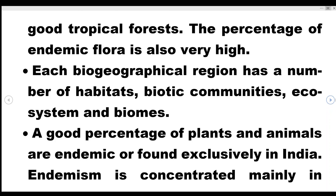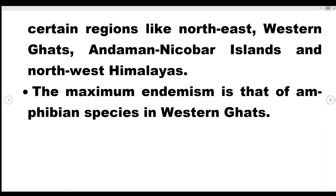A good percentage of plants and animals are endemic, or found exclusively in India. Endemism is concentrated mainly in certain regions like the North-East, Western Ghats, Andaman-Nicobar Islands, and Northwest Himalayas. Maximum endemism is seen in amphibian species of the Western Ghats. Thank you very much.